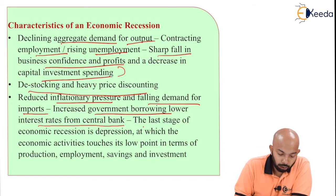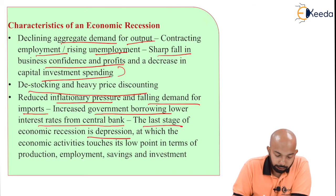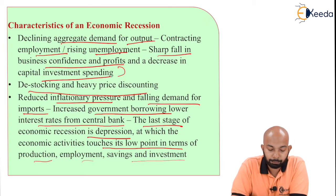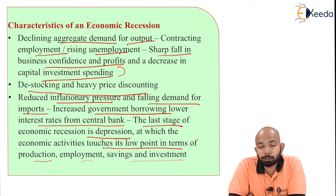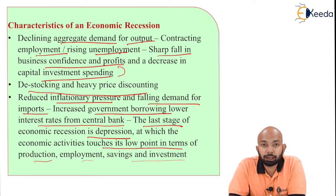The last stage of economic recession is depression, at which economic activity touches its lowest point in terms of production, employment, saving, and investment. Companies and individuals reach the lowest point of their productivity and engagement. So these are the basic things we can discuss when it comes to the stages of the economic cycle — that is, inflation and deflation and their characteristics. This is all that we had on the stages of the economic cycle. Thank you.